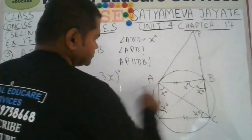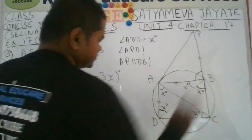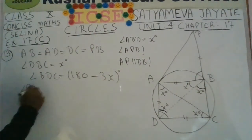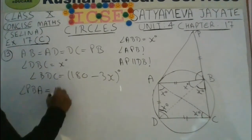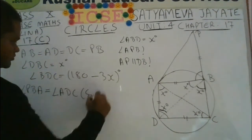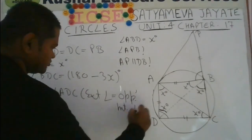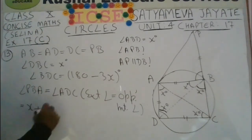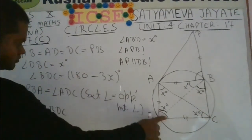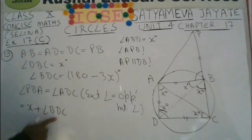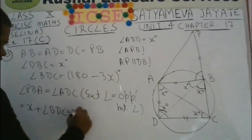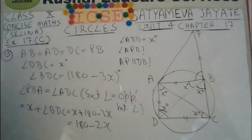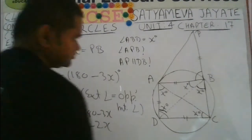Angle PBA is an exterior angle, so it equals the opposite interior angle. That is, angle PBA equals angle ADC. We can say angle PBA equals angle ADB plus angle BDC. Using the cyclic property, angle PBA equals x plus angle BDC. Substituting the value of angle BDC as 180 minus 3x, we get angle PBA equal to 180 minus 2x.